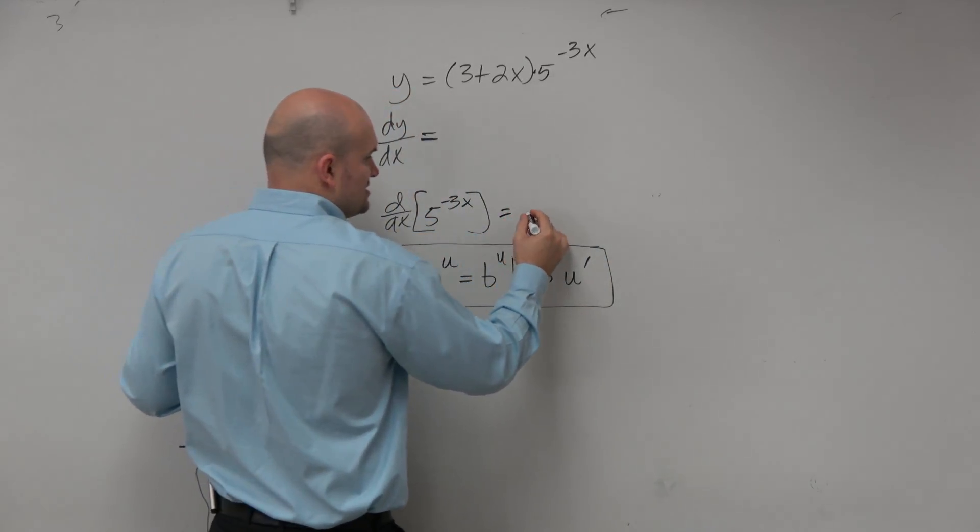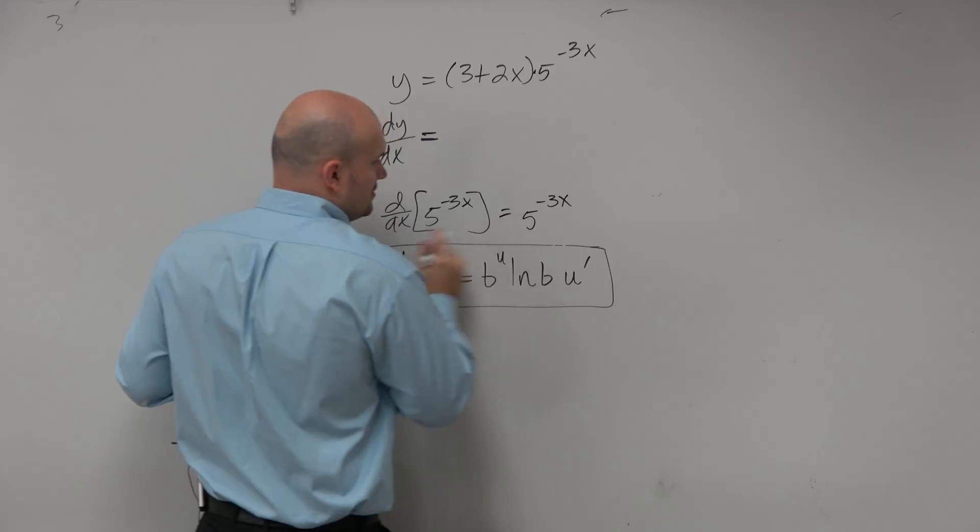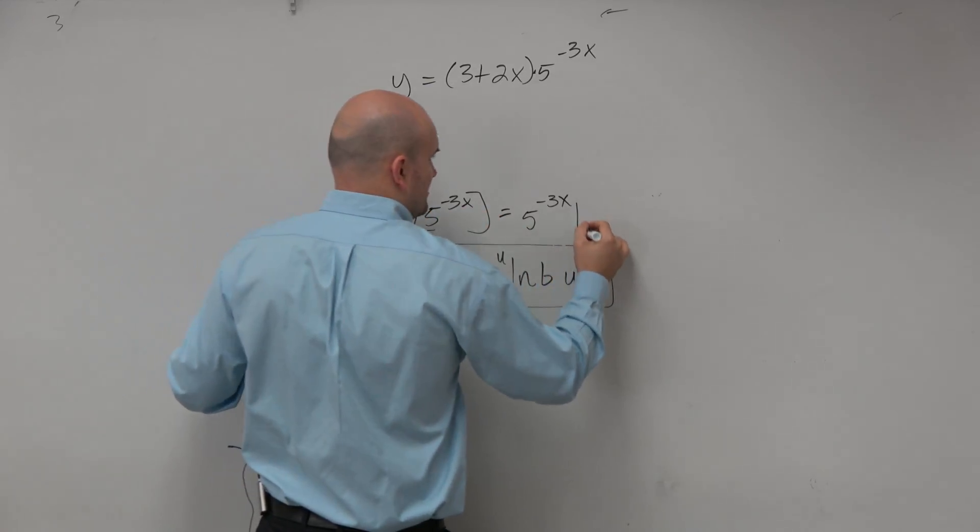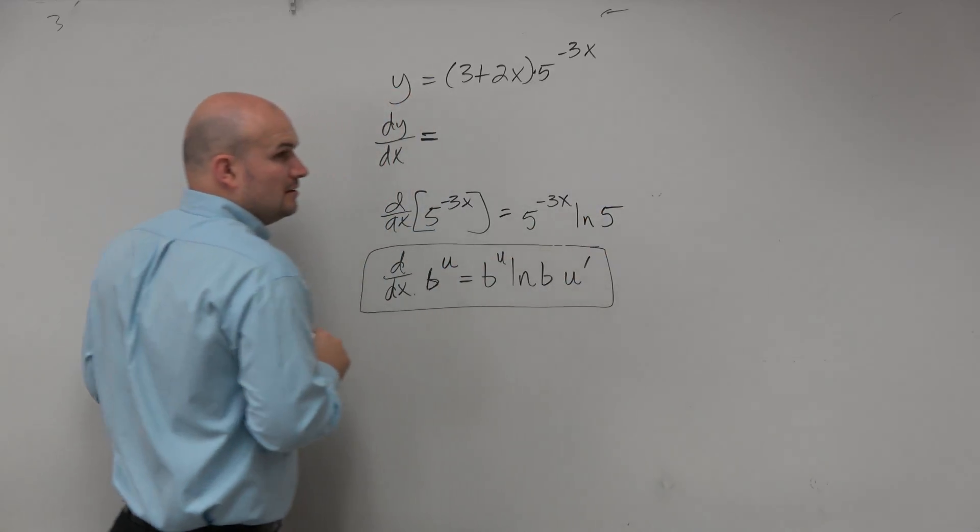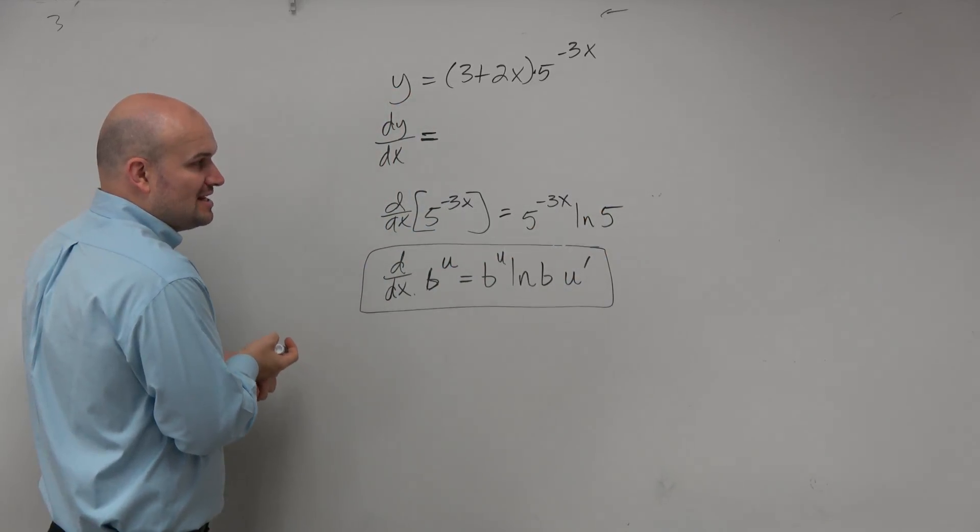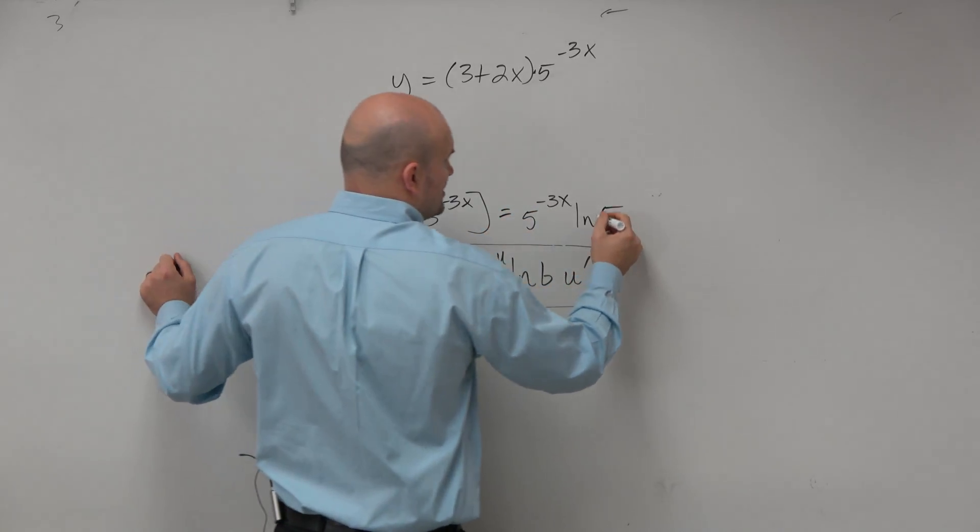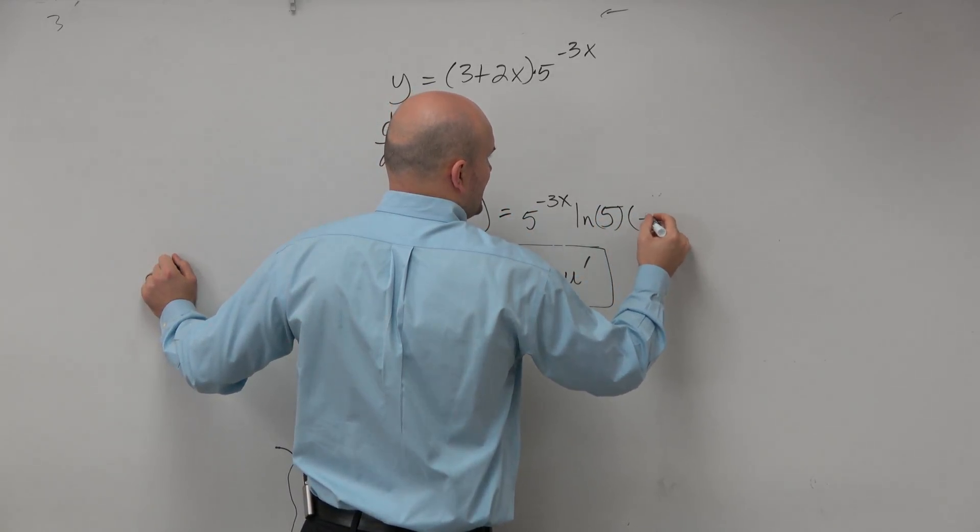we're going to have the original exponent times the ln of the base, and then times, that is going to be all times the derivative of our differentiable function as the power, which in this case is going to be negative 3.